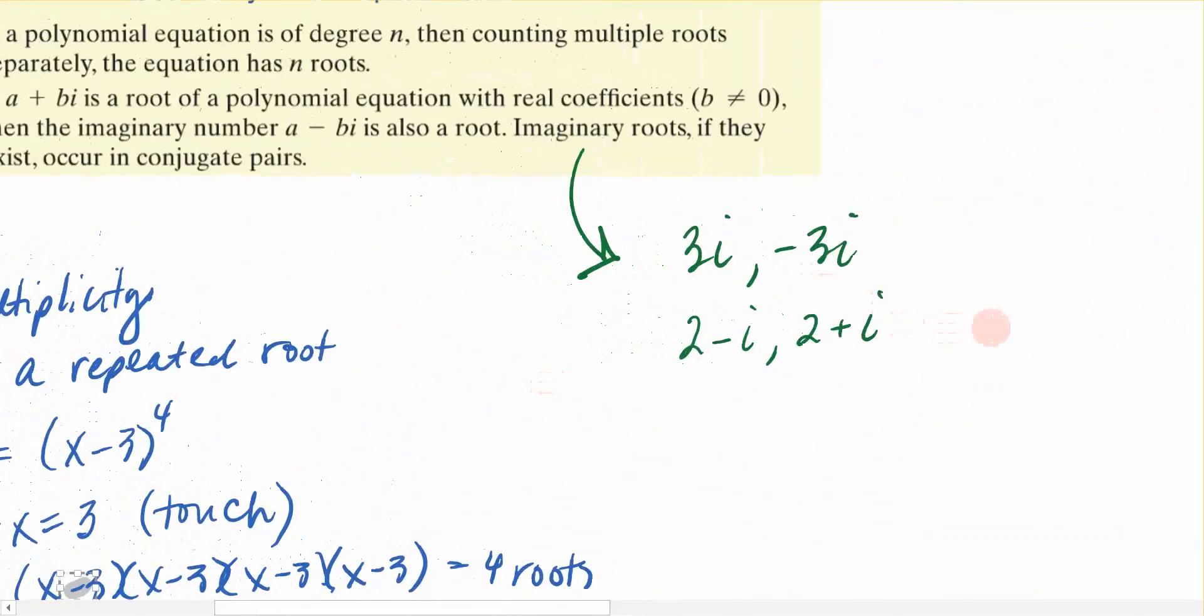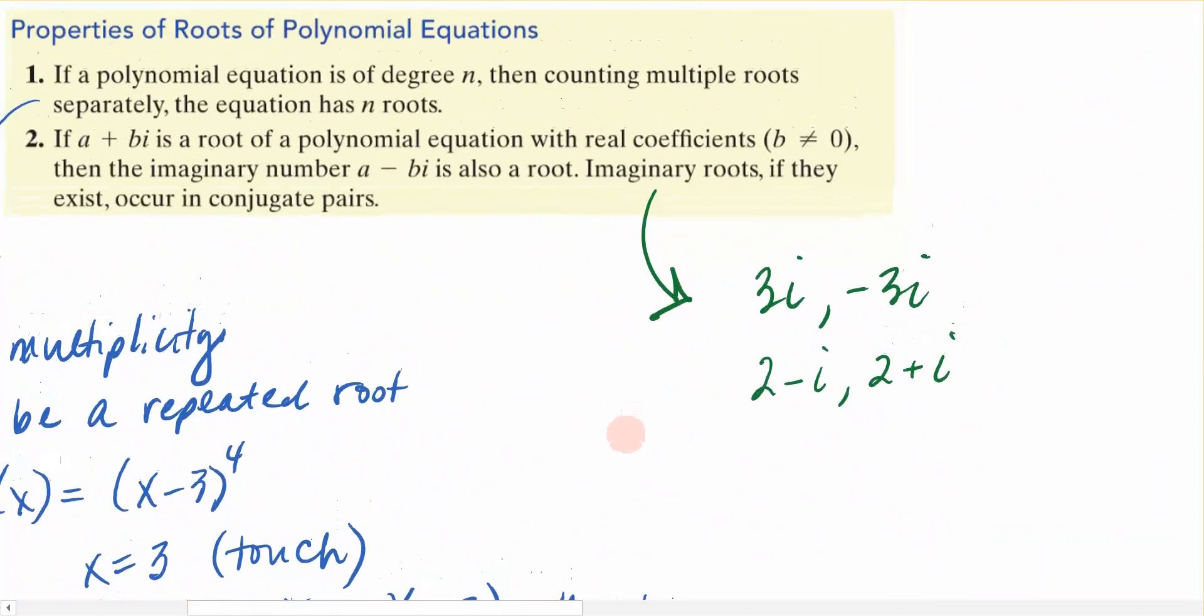Now let's look at the second part of this property, and it has to do with complex numbers. All this basically says is that complex roots come in pairs, and they are their conjugate pairs. So if I have a plus bi, the conjugate of a plus bi is a minus bi. Remember, it's the same numbers only with the opposite sign, and they come in pairs.